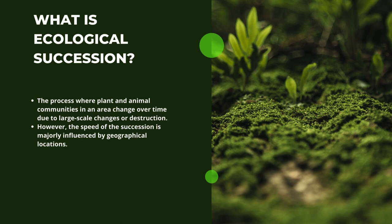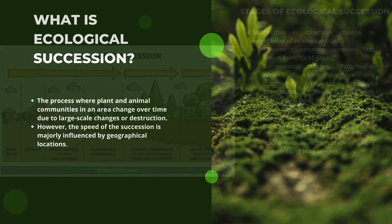Ecological succession is the process where plant and animal communities in an area change over time due to large-scale changes or destruction. However, the speed of the succession is majorly influenced by geographical locations.